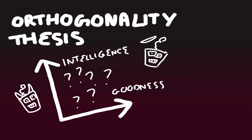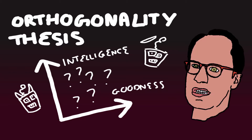The problem of AI alignment arises from what is called the orthogonality thesis. First put forward by Oxford philosopher Nick Bostrom, this is the idea that intelligence and goals can exist in any combination.